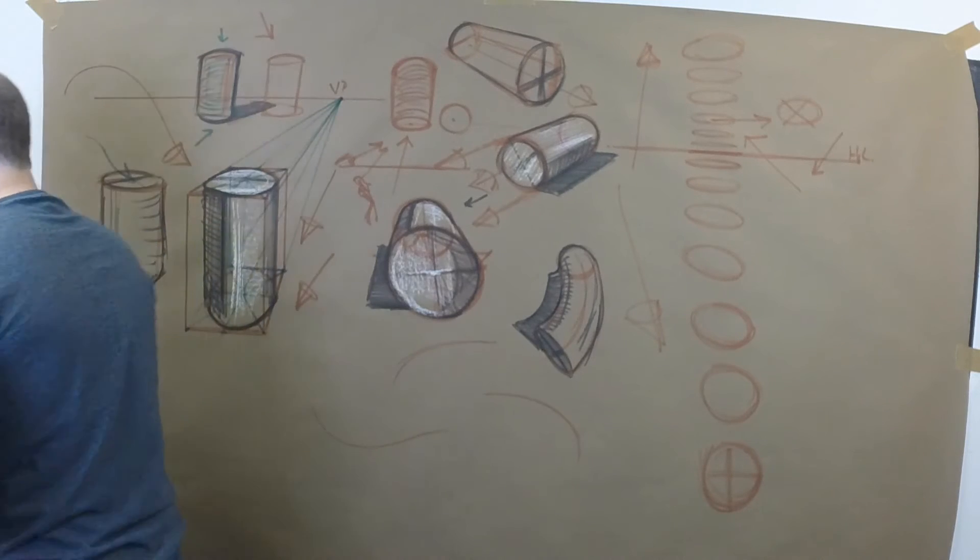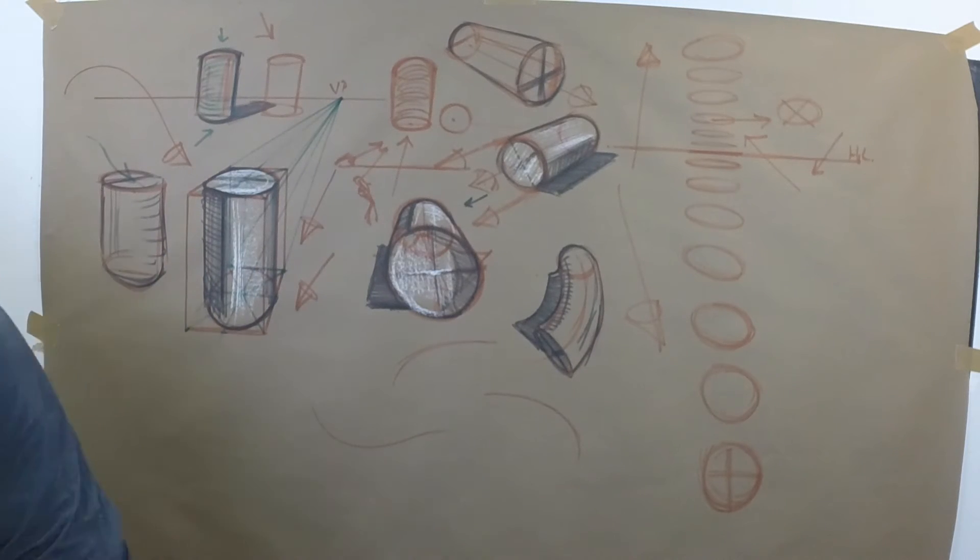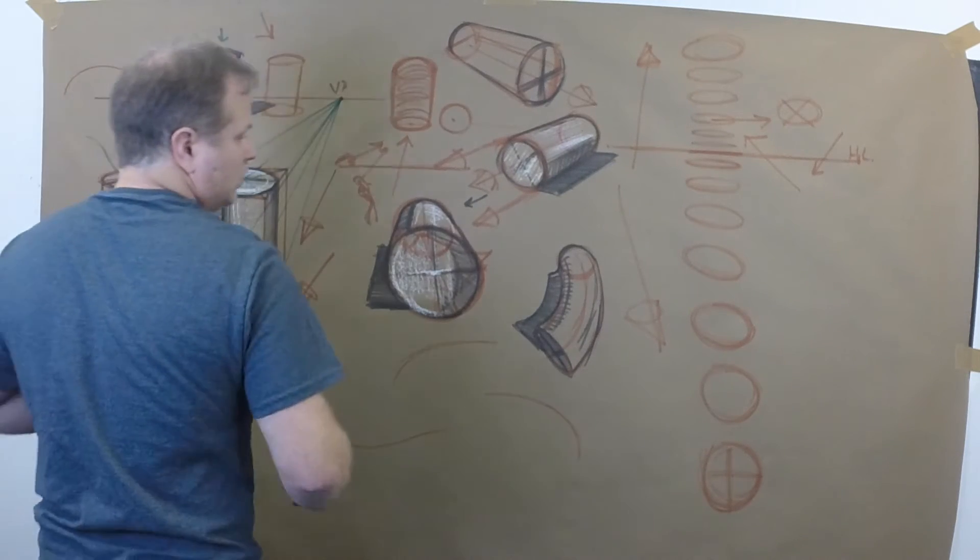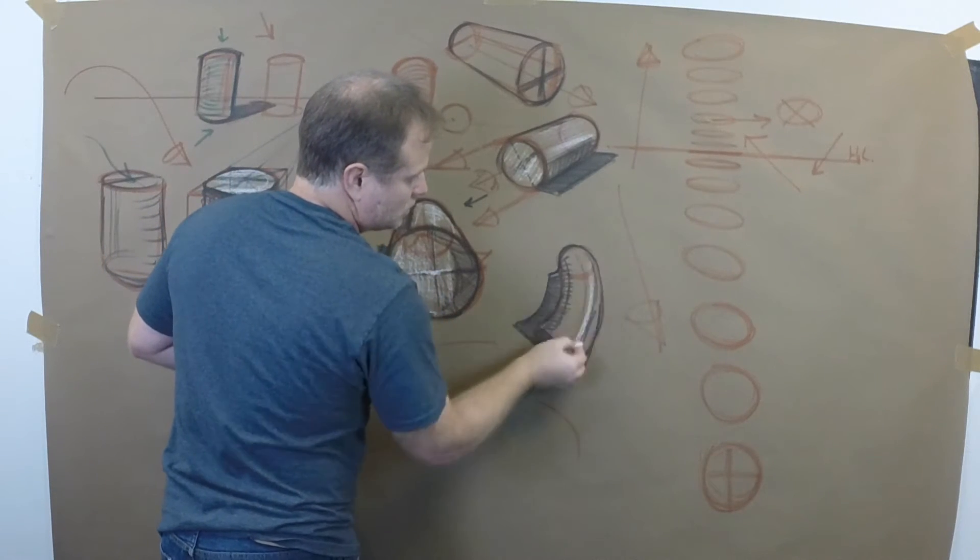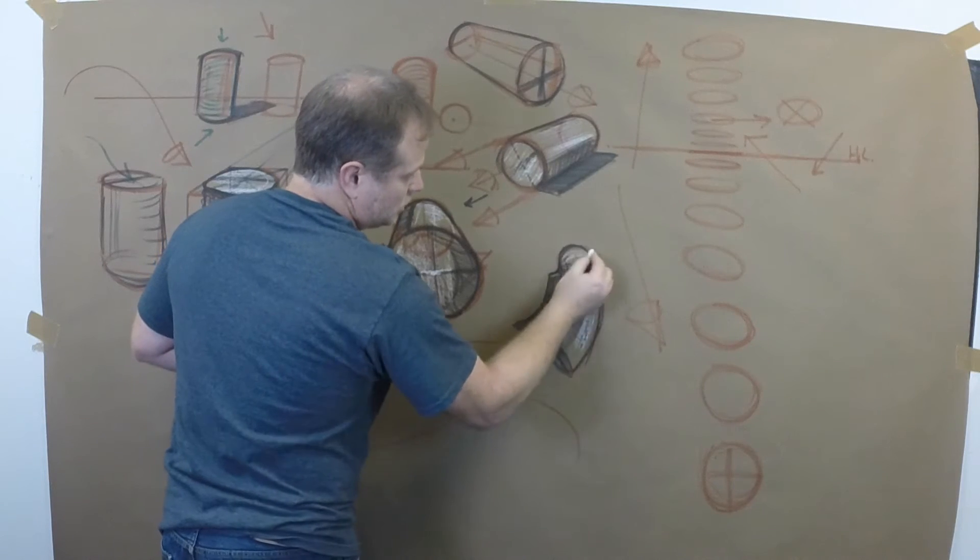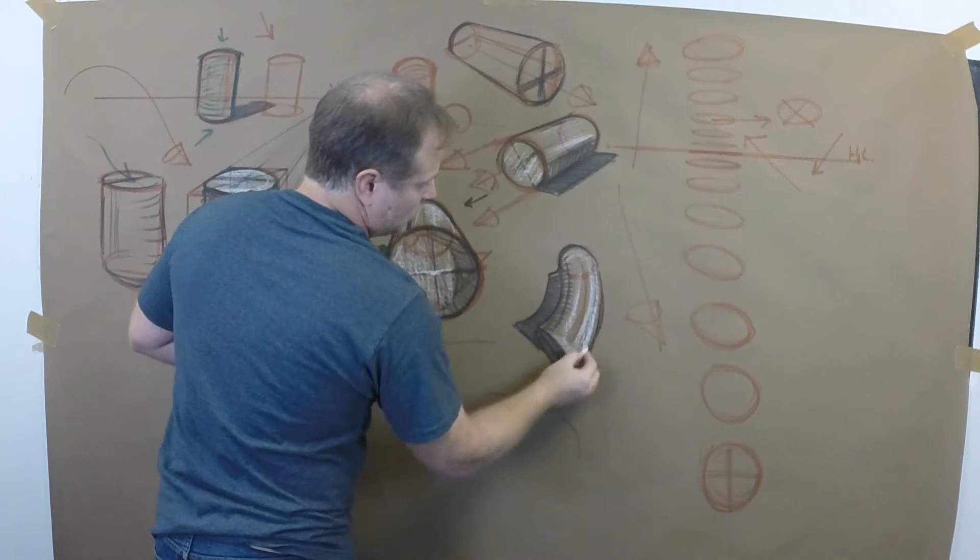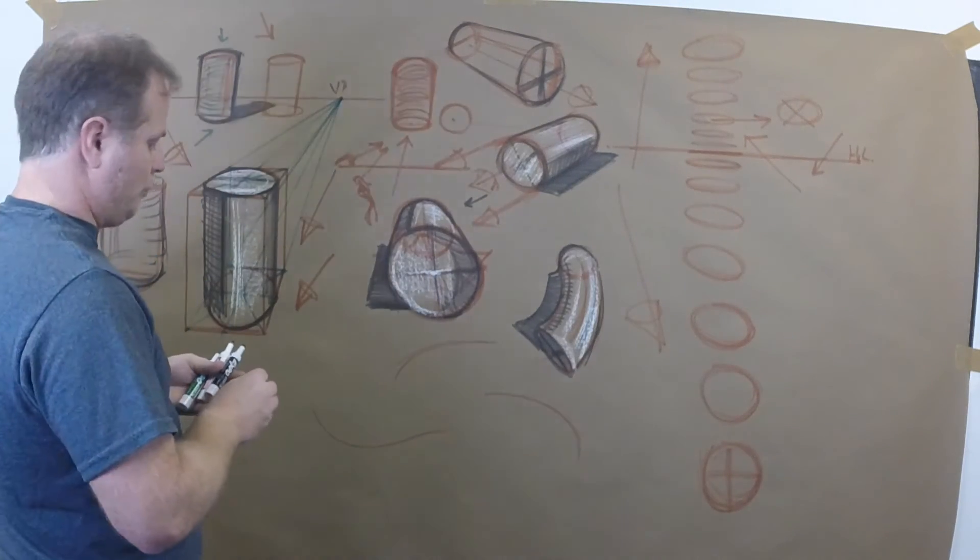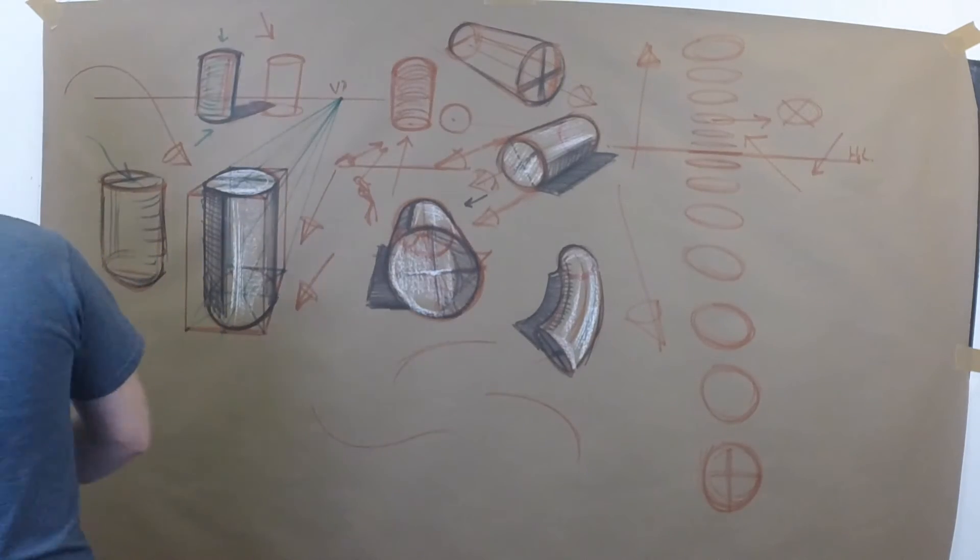And we've got, grab my chalk here. Maybe the light source is hitting here. And we've got a nice sort of noodled, what I call a noodled cylinder.